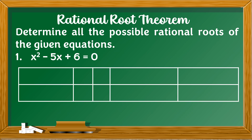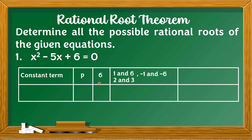First, we're going to determine the constant term of the given equation — that will be the value of P. In this equation, the constant term is positive 6. The factors of 6 are 1 and 6, 2 and 3, and their negatives: negative 1 and negative 6, negative 2 and negative 3.